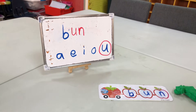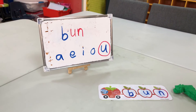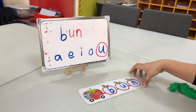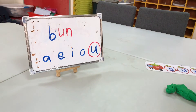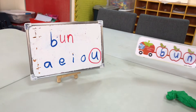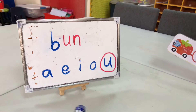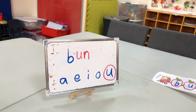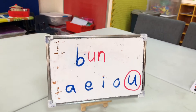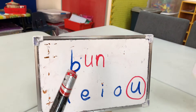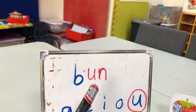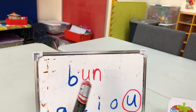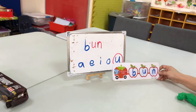Good morning everybody. We are going to be learning about the short vowel U. The short vowel U makes the sound 'uh.' So we have A, E, I, O, and 'uh.' This word right here — we have 'bun.' So we have 'buh-un,' and we're learning the short U family.